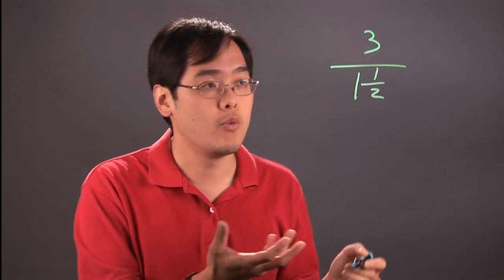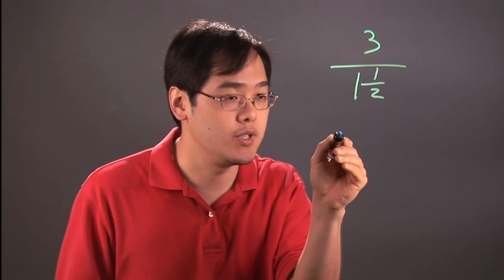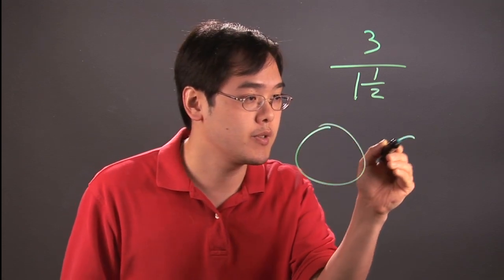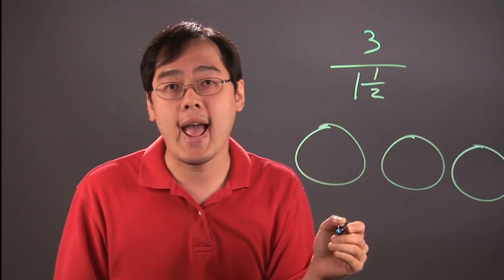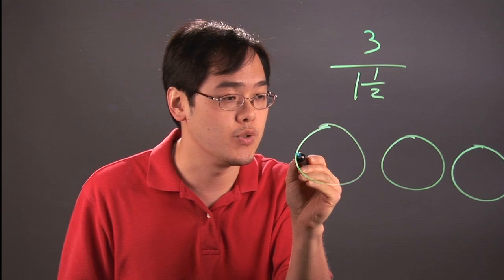So one thing that you can use with modeling and constructivist approach is you can draw, for example, three circles and since you know you're dividing by one and a half you're actually using halves to get there.